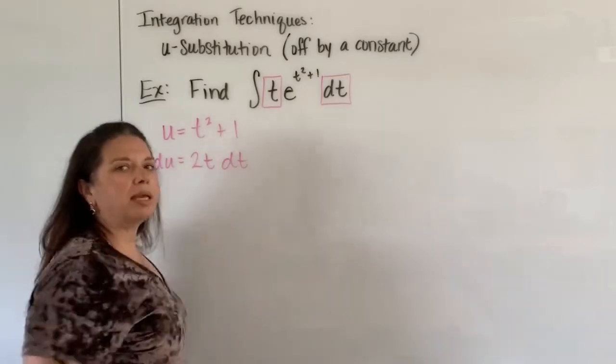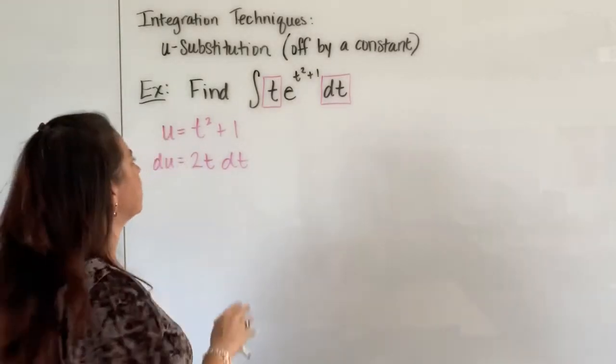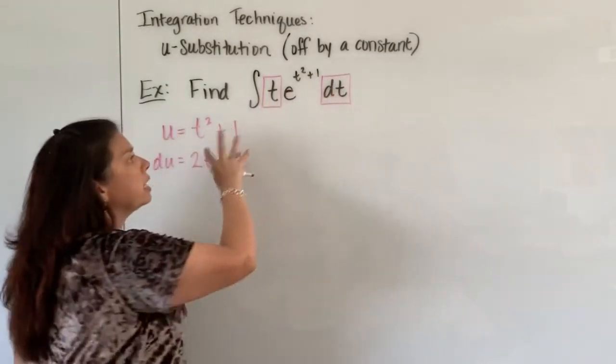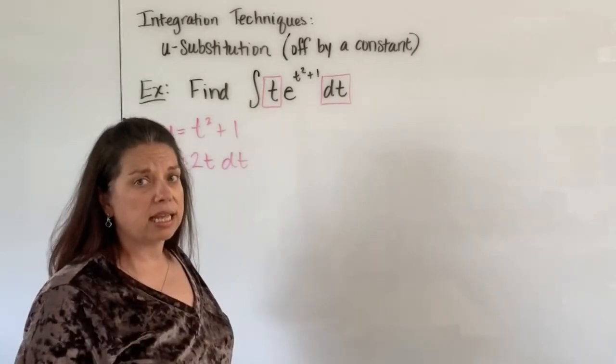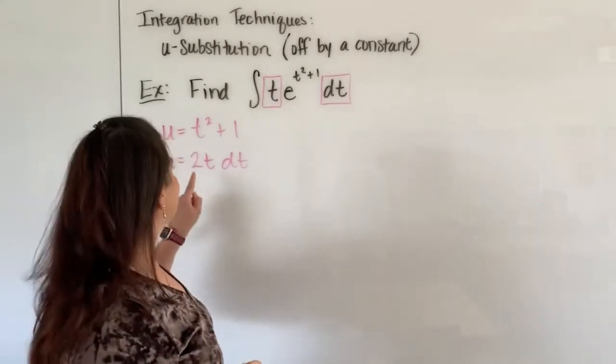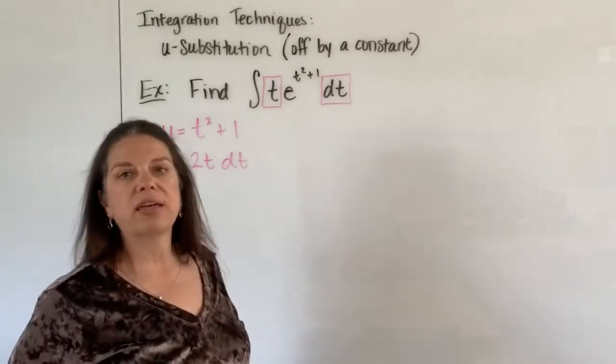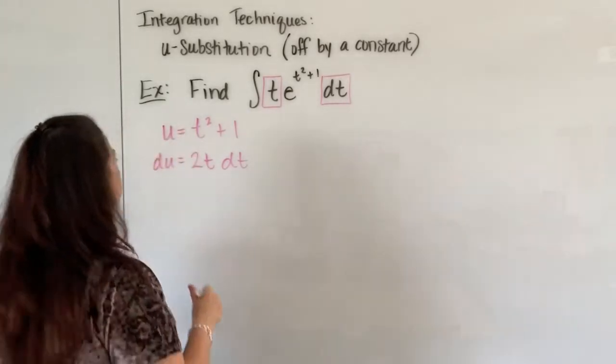What I don't have is a 2. So this is what I mean by off by a constant. We would have just a perfect exchange like in the last examples if in fact I didn't have a 2 sitting here. But I got to deal with that. No biggie.